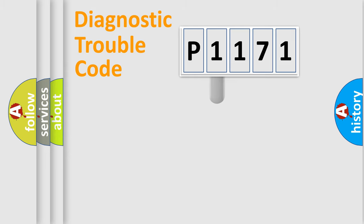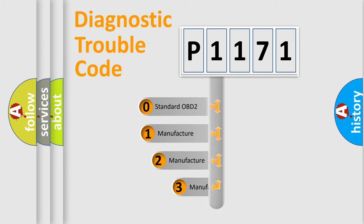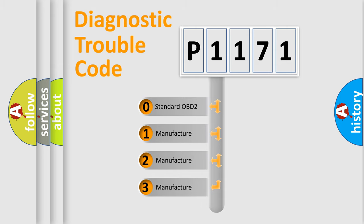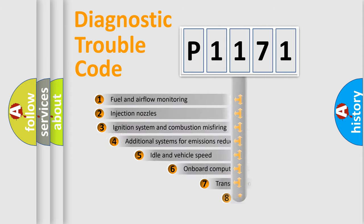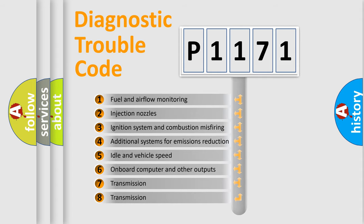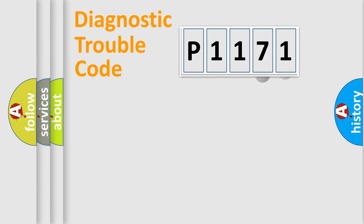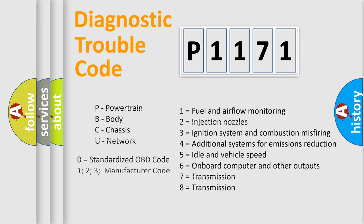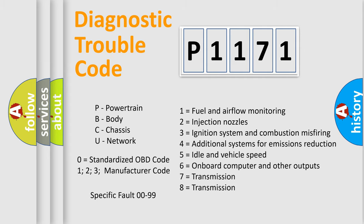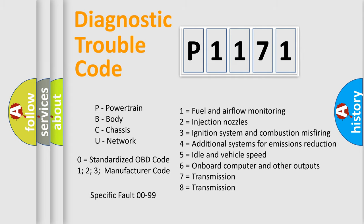This distribution is defined in the first character of the code. If the second character is expressed as zero, it is a standardized error. In the case of numbers 1, 2, or 3, it is a more specific expression of a car-specific error. The third character specifies a subset of errors. This distribution is valid only for the standardized DTC code, and only the last two characters define the specific fault of the group.